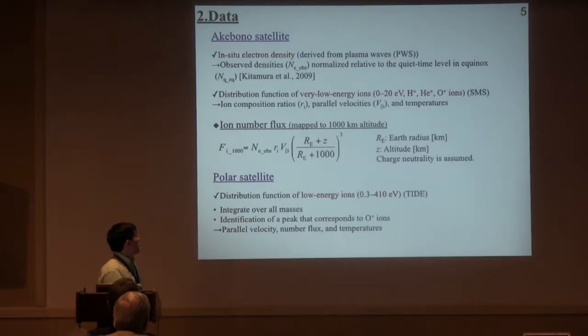We used Akebon and Polar satellite data. In-situ electron density derived from plasma waves, upper-hybrid resonance waves and Poitier mode waves are used. Observed electron densities are normalized relative to the quiet time level. Akebon also observed very low-energy ions, about the spacecraft potential to 20 eV. Ion composition ratio and parallel velocities and temperatures are calculated.